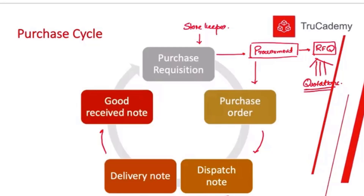To confirm receipt of the goods in the warehouse, the storekeeper then needs to produce a Goods Received Note. On the Goods Received Note, it will show how many goods were received, against which purchase order, and against which dispatch note the goods were received.